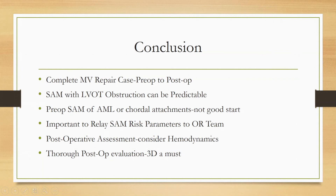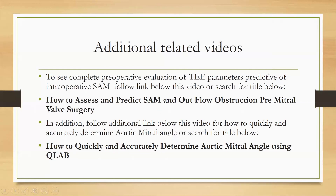It is important to do an accurate postoperative assessment and consider the hemodynamics while doing so. You want to ensure adequate preload so that any SAM is not exaggerated, and adequate afterload so that blood pressure is not abnormally low. Be patient for these parameters to get optimized before making a final call on the degree of SAM, mitral regurgitation, and outflow obstruction. Additional videos are available, including the risk factor video discussed and a video on how to quickly determine the aorto-mitral angle in less than one minute in the operating room.